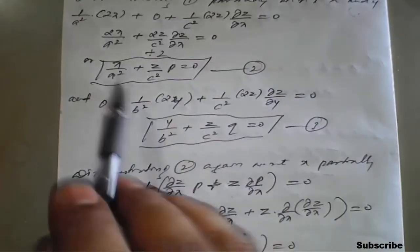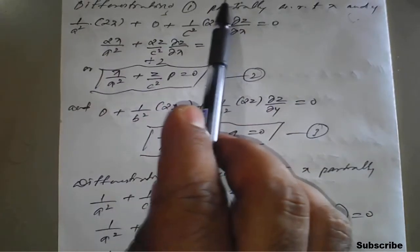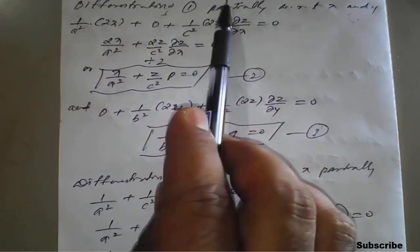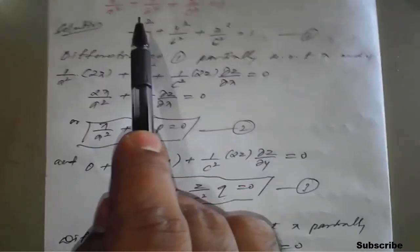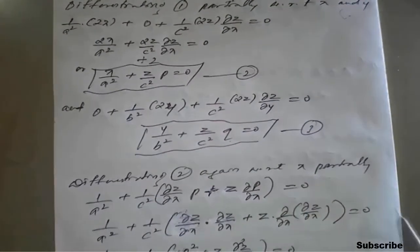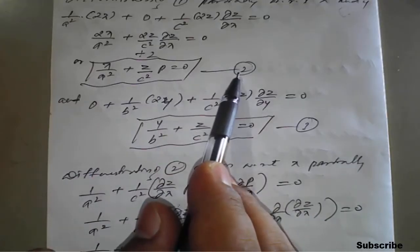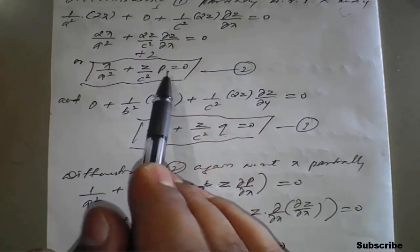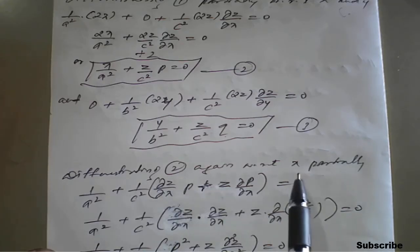However, using equations 2 and 3 alone, we cannot eliminate all three arbitrary constants a, b, and c, because we have two independent variables but three arbitrary constants. So we need to go for a few more partial derivatives — specifically, differentiating equation 2 again partially with respect to x.